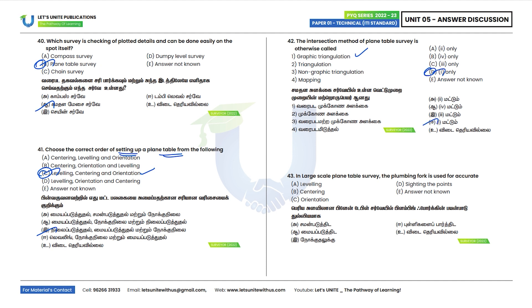Forty-third question: In large scale plane table survey, the plumbing fork is used for accurate centering. The plumbing fork — also called a U-fork — is used for centering. Option B is the correct answer.